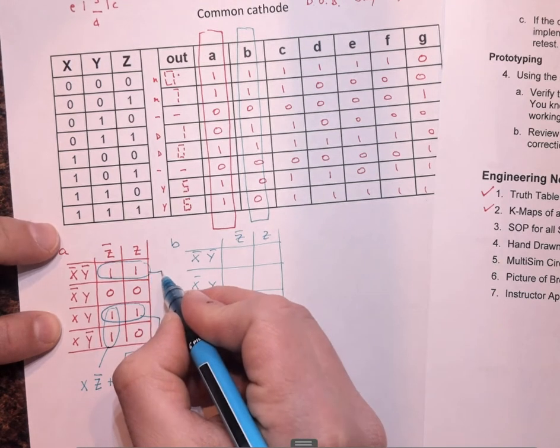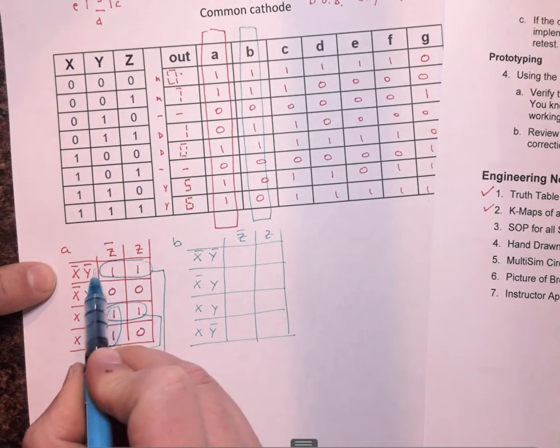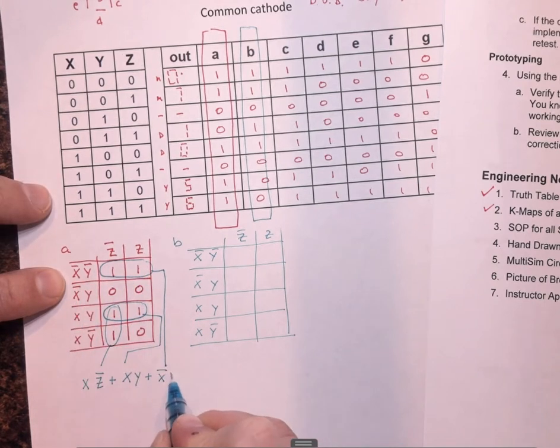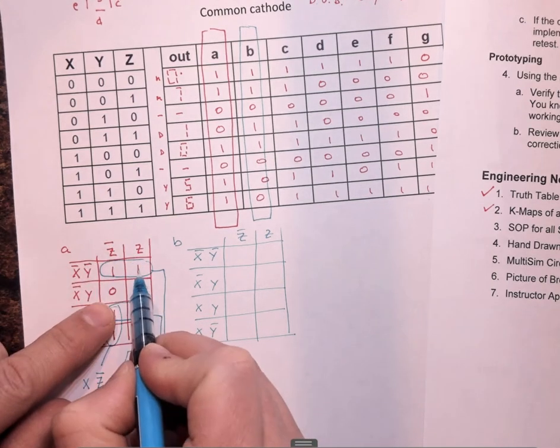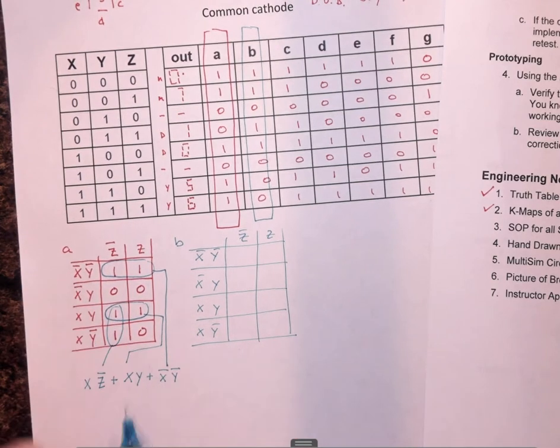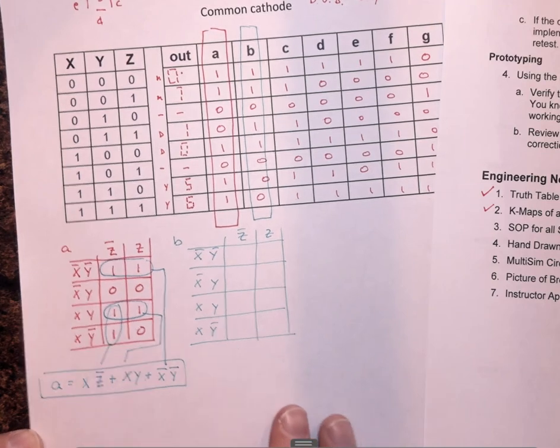Or the last one. Again, it's an entire row, so it should be not X, not Y. Right, they don't share the Z value. One's got a not Z, the other one has a Z, so they don't share that, but they do share the same not X, not Y. Okay, so for LED A, this is the sum of our products, and that's it.